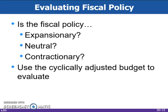Another name for the cyclically adjusted budget is the full employment budget. The cyclically adjusted budget measures what the federal budget deficit or surplus would be with existing taxes and government spending if the economy is at full employment. Fiscal policy is neutral when tax revenues equal government expenditures after adjusting for the reduction of revenues from a recession.